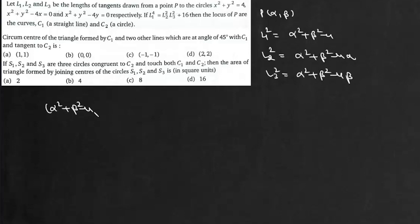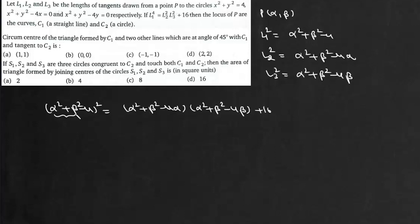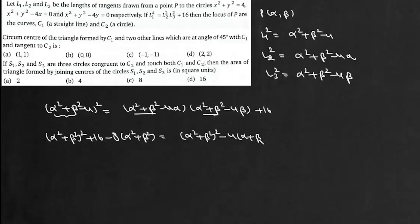Since l1⁴ = (α² + β² − 4)², this equals (α² + β² − 4α)(α² + β² − 4β) + 16. Expanding the left side gives (α² + β²)² + 16 − 8(α² + β²), and the right side gives (α² + β²)² − 4α(α² + β²) − 4β(α² + β²) + 16αβ + 16.